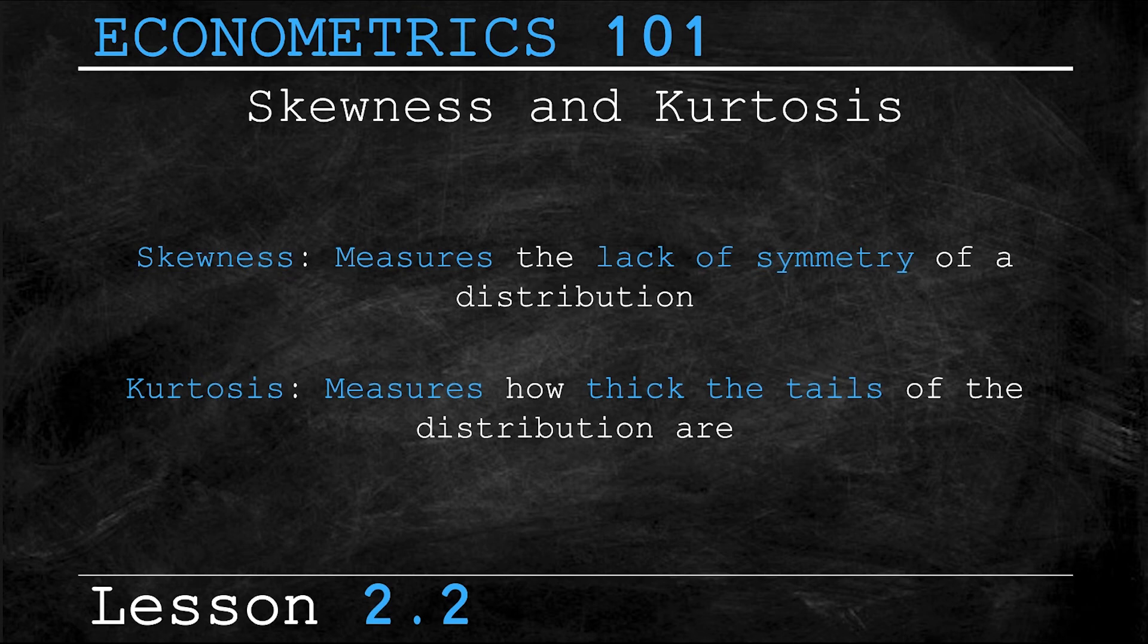If there are a lot of outliers, that is outcomes that deviate a great deal from the mean, then the tails of the distribution will be thicker as more outcomes are appearing further away from the mean. Now these two topics alone have a lot of information involved with them. So if you're struggling to understand the concepts and would like a dedicated video to either or both of them, just let us know in the description.